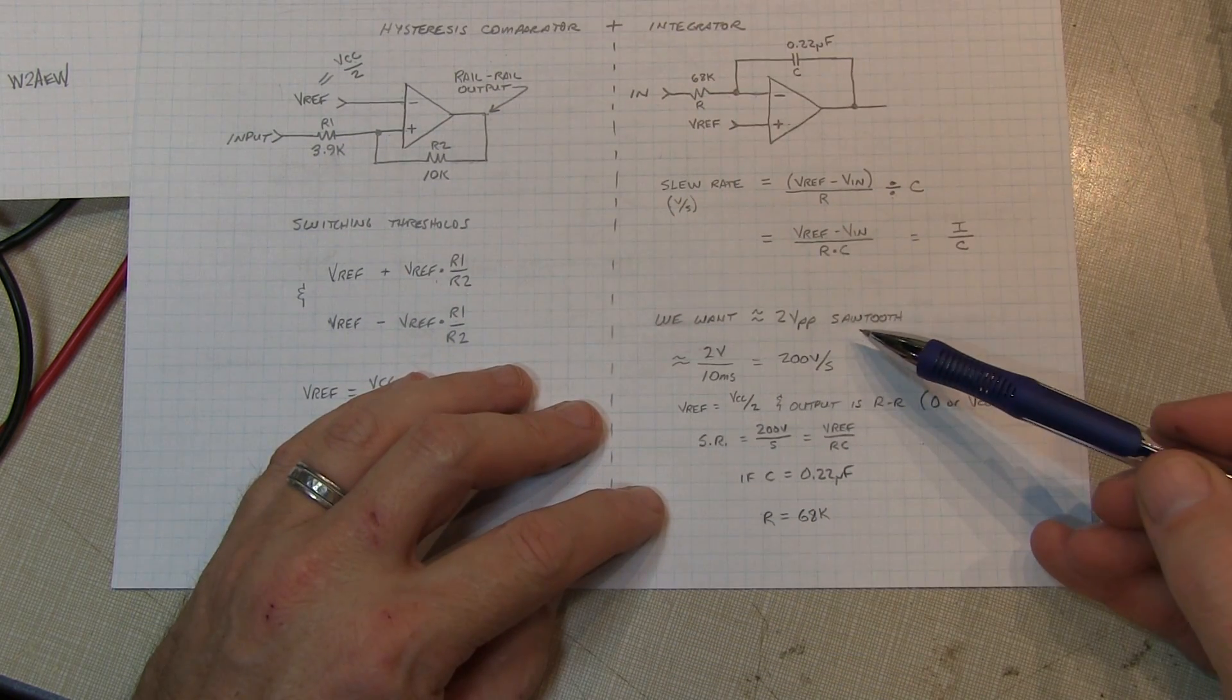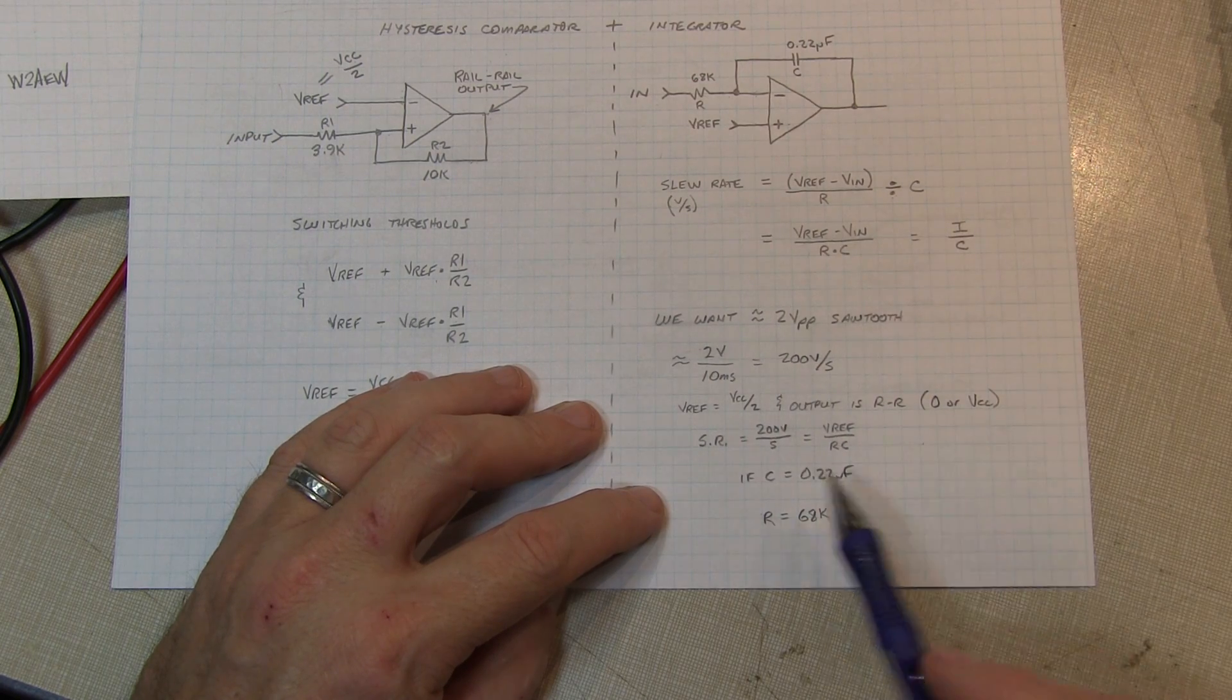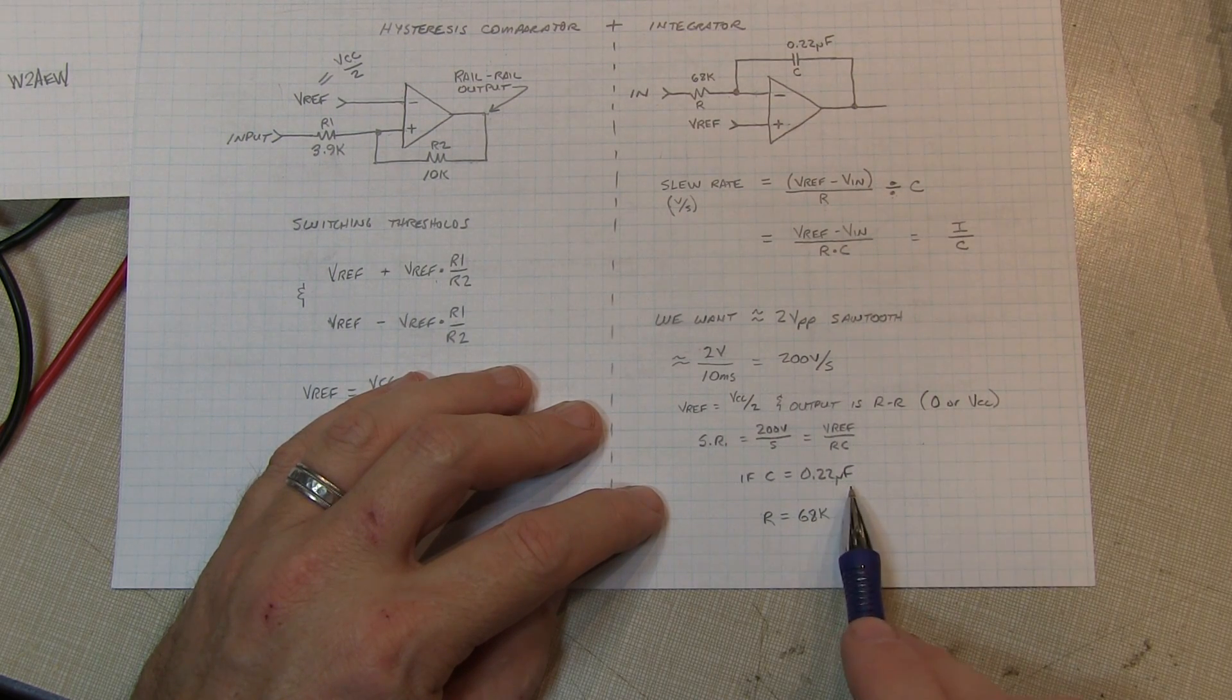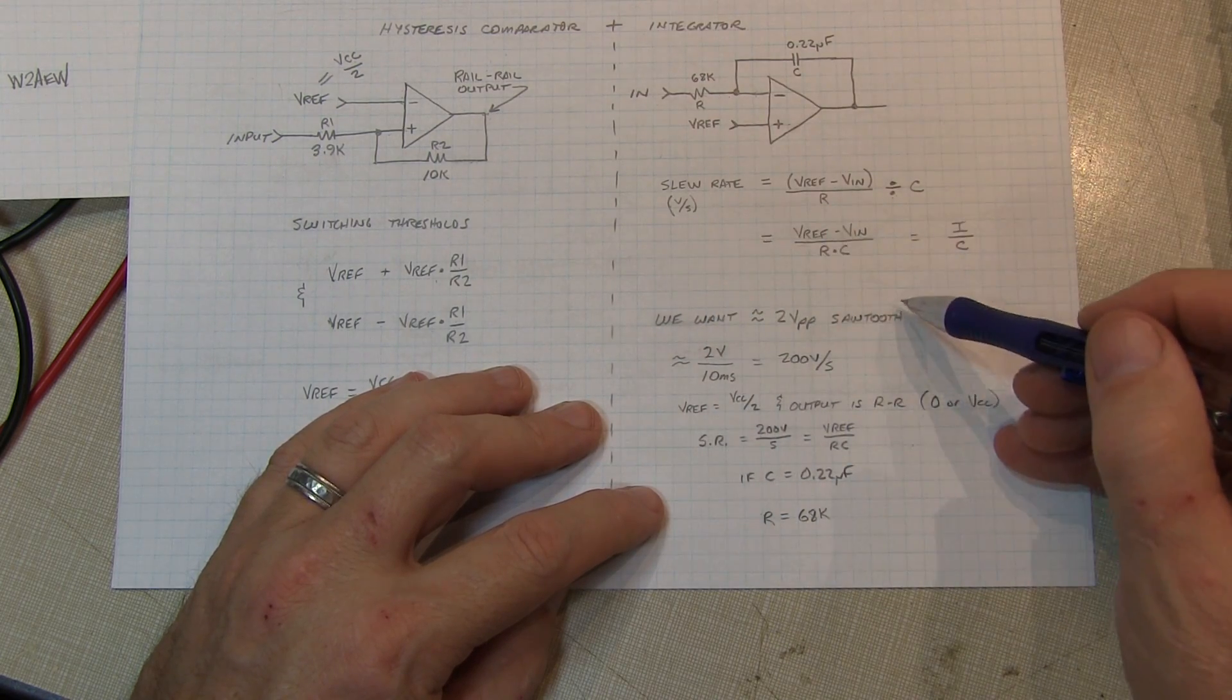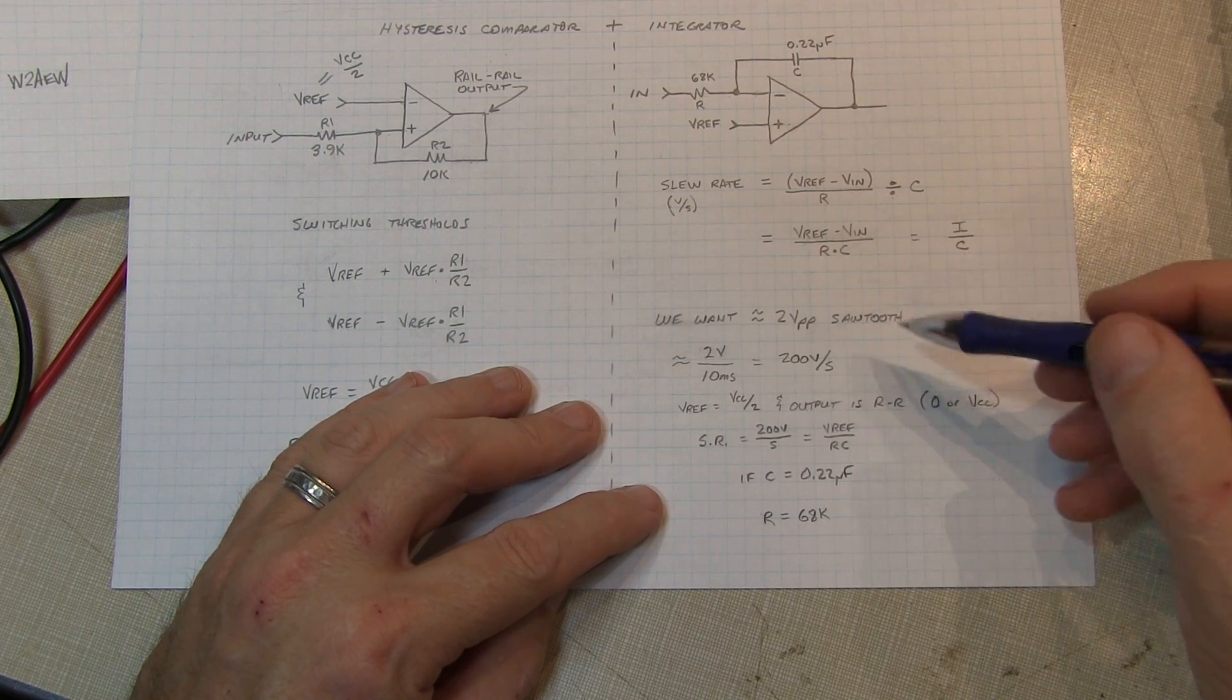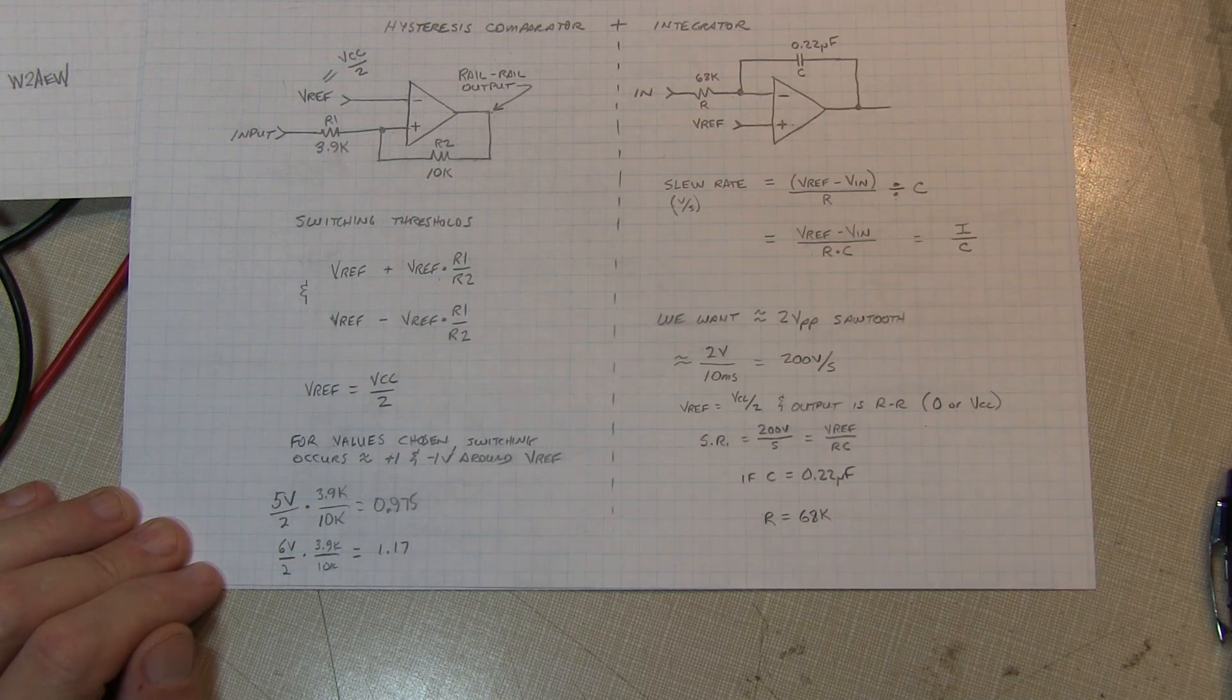So a couple of other ways of drawing that equation. If we want, in our case, about a 2 volt peak-to-peak sawtooth, that's about a 200 volt per second slew rate going up or down. So we can just run some numbers in here and pick some values. I happen to just grab a .22 microfarad capacitor out of my junk box, and from that calculated out about a 68K resistor would give us the slew rate that I would need, so that I would run at about 200 volts per second. And then given the switching thresholds we calculated over here, they give us approximately a 2 volt peak-to-peak sawtooth. So you can play with the numbers here, just experiment with some values, and this is what we came up with for the sawtooth oscillator.